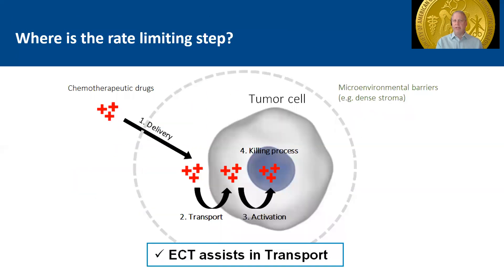Generally speaking, the rate-limiting step of chemotherapy drugs tends to be diffusion through the cell membrane. Electrochemotherapy can assist in this transport by increasing the likelihood that drugs can penetrate more readily through the weakened transmembrane pores that occur. Once inside the cell, the cell can also be activated and there are increased killing processes that occur. The other main advantage of local electrochemotherapy is in the microenvironment, and these tools can overcome the dense stroma that occurs, for instance, in pancreatic cancer by applying local delivery.